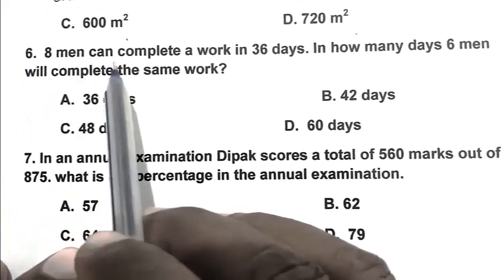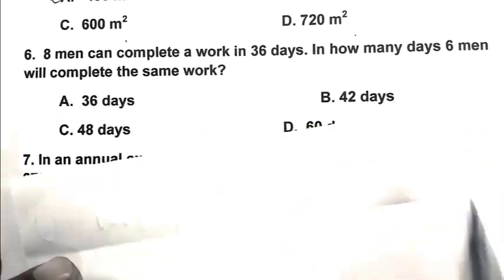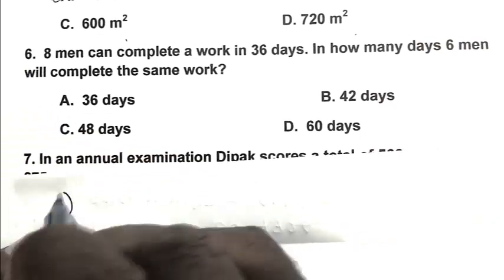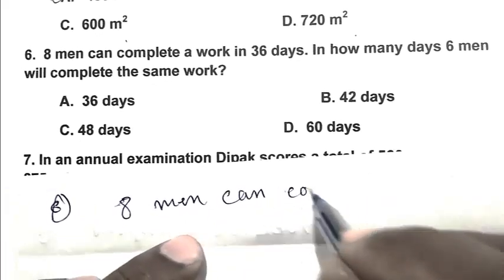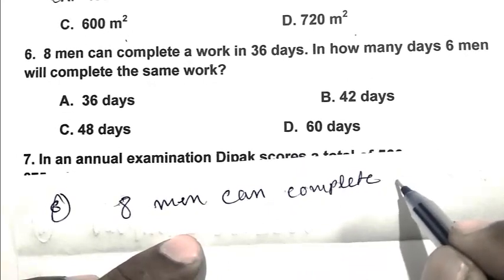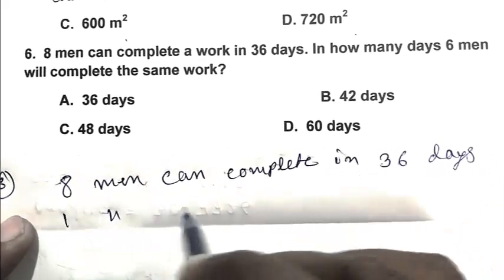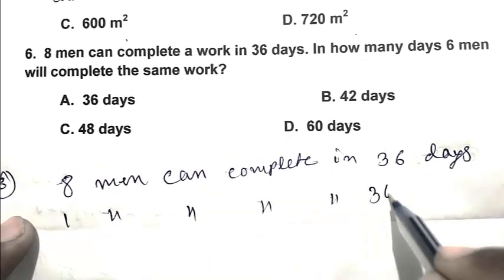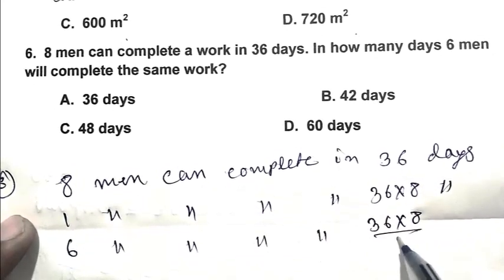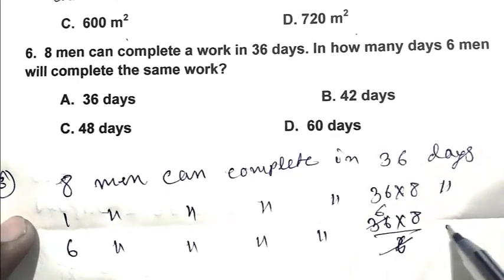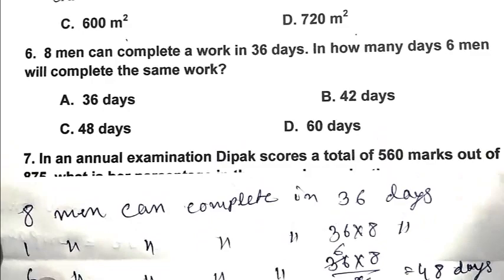Question number 6. 8 men can complete a work in 36 days. In how many days 6 men will complete the same work? So we can calculate it by unitary method. 8 men can complete in 36 days. 1 man can complete in 36 multiplied by 8 days. And 6 men can complete in 36 multiplied by 8 divided by 6. That is 48 days. So C is the right answer.